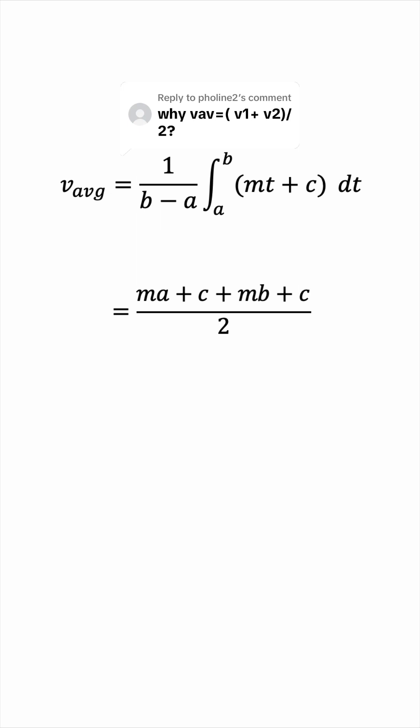The reason we're doing this rearrangement is that, remember v is equal to mt plus c. So when t is equal to a, the velocity will be mA plus c, and this is exactly what we have here. And when t is equal to b, then the velocity will be mB plus c, and that's exactly what we have here.